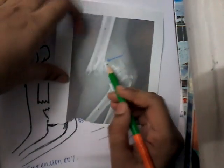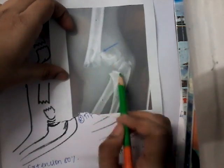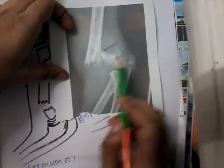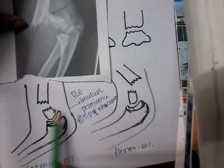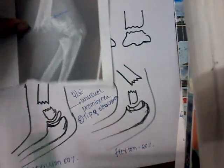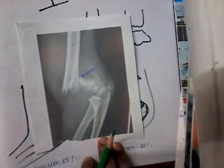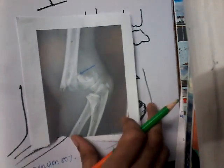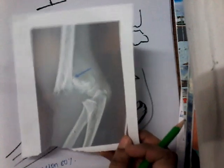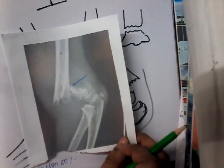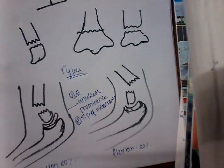This is a displaced fracture — you can clearly see the distal fragment, and it resembles extension type of deformity. With the help of X-rays you can clearly identify the fractures.